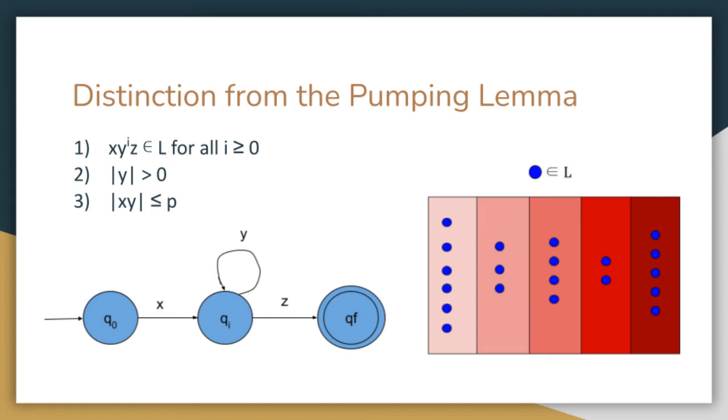On the other hand, figure 2 shows how the Myhill-Nerode theorem proves that a language is regular by partitioning the language into a finite number of equivalence classes. Each shade of red represents a different equivalence class, and each blue dot represents a string in the language that belongs to a certain equivalence class where all strings in the same class are indistinguishable from each other.